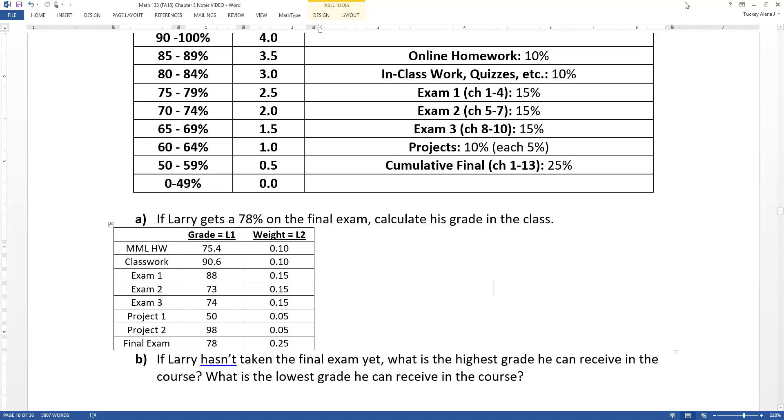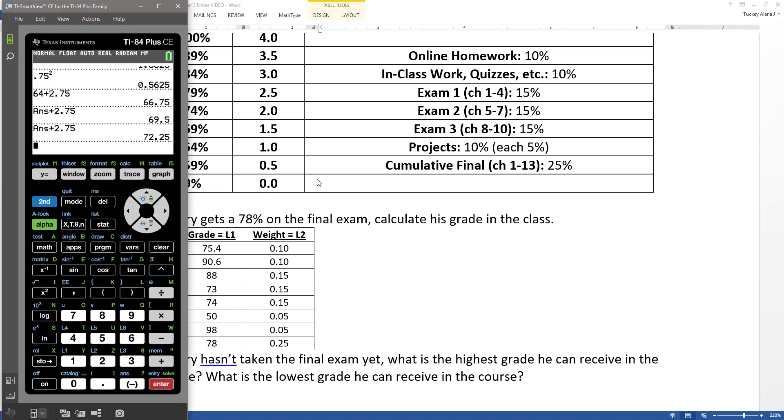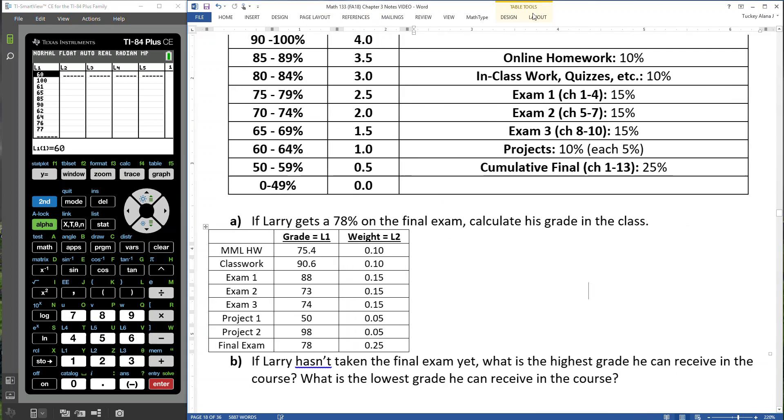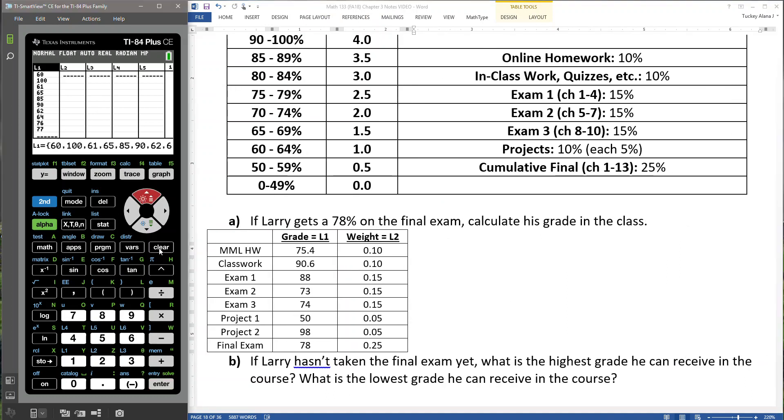Alright. So now I want to calculate his grades. So you know where I'm going and so do I. I'm going to a calculator. So I'm going to go to Stat. I'm going to go to Edit. And I'm going to clear. Go up and press Clear, Enter. And clear out any old data I might have from either column 1 or column 2. And then I'm going to type in the grades for Student Larry. So I type them all in and then I'm going to go over to L2 and I'm going to type in their weights.